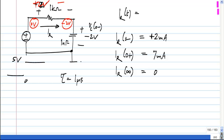So what is the equation for IR of t for t greater than zero? 7 milliamps exponential minus t by 1 microsecond. That's all.